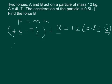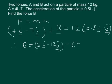So therefore, B equals, let's multiply out that bracket, 6I minus 12J, and then minus 4I minus 7J.